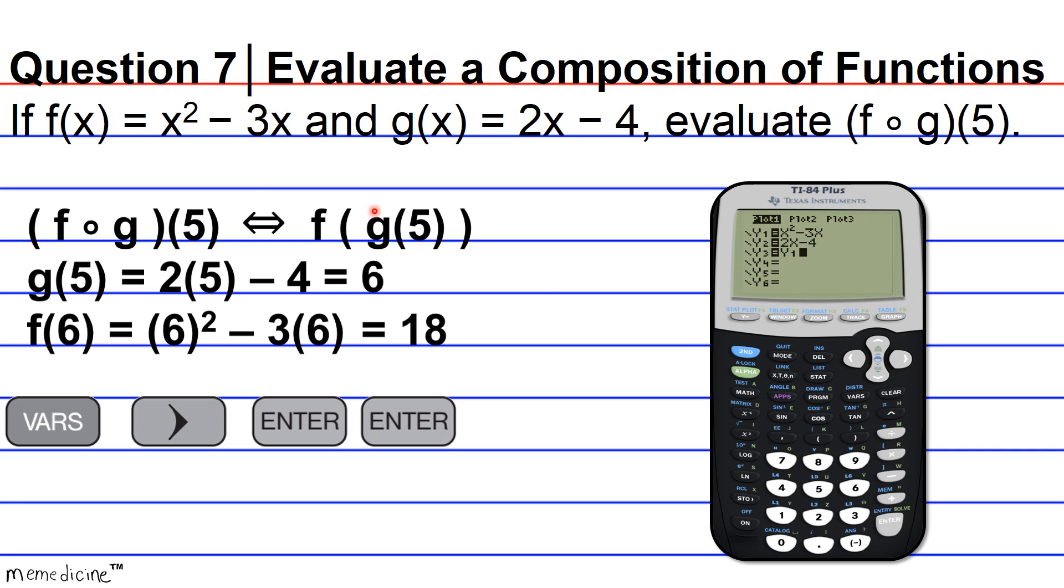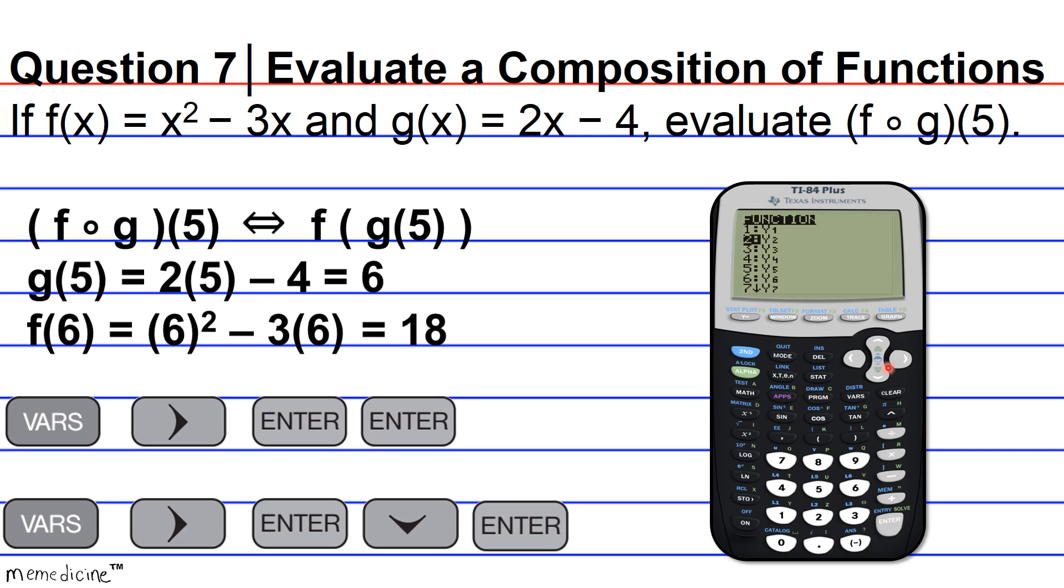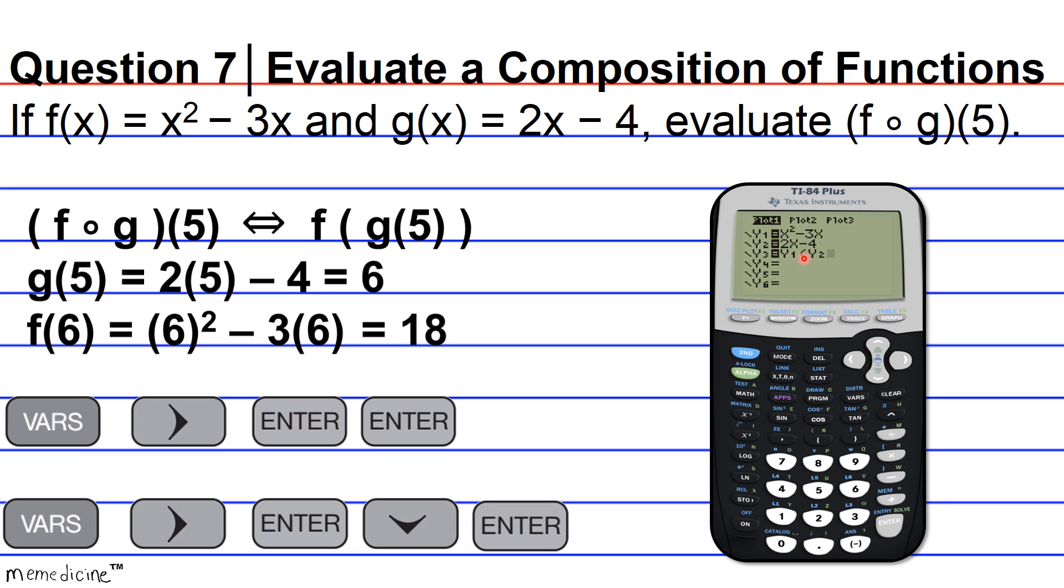And after doing that, you're going to have to input y₂ because we're temporarily allowing y₂ to equal g(x). So you use the same similar sequence to input the y₂ function. You're going to hit the variables button. Then your right navigation key in order to select y variables. And then you hit enter once because a window is going to pop up with different types of variables. But we're only interested in the functions variables. So you hit enter because that's the first place. And then you hit the down arrow, because you want to select the second option, the y₂ variable. Or you could have just pressed the number two. And then you could skip hitting enter. But if you don't press the number two, what you'll have to do is hit enter after hitting the down navigation key.